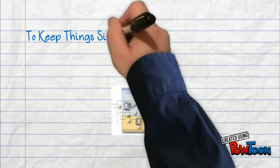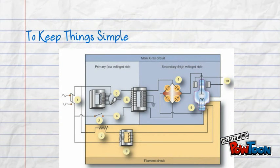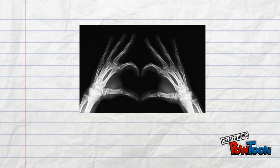To keep things simple, the filament circuit directs the electricity to the X-ray tube on the cathode side. The filament gets heated, the electrons are boiled off, and then X-rays are produced.